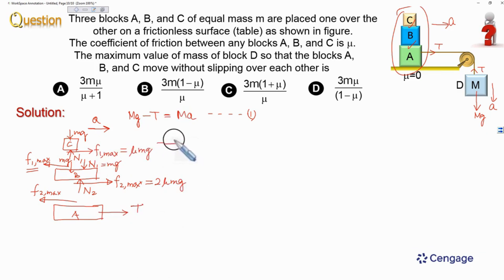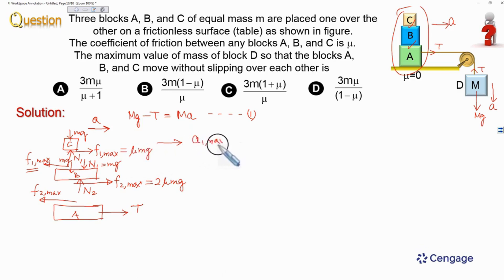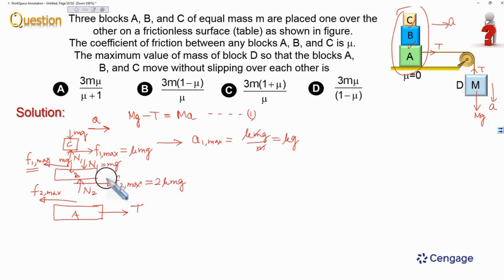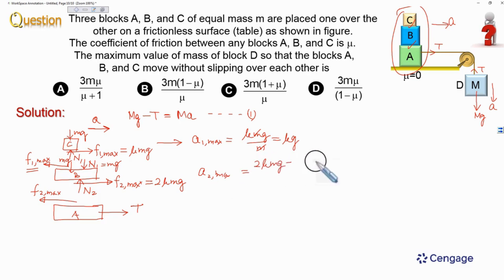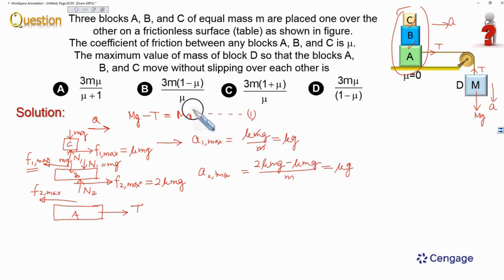The maximum possible acceleration of block C is F1 max divided by m, giving a1 max = mu × mg / m = mu × g. For block B, the net force is 2mu×mg − mu×mg = mu×mg, so a2 max = mu×mg / m = mu × g. Both maximum accelerations equal mu × g, confirming the common acceleration a = mu × g.